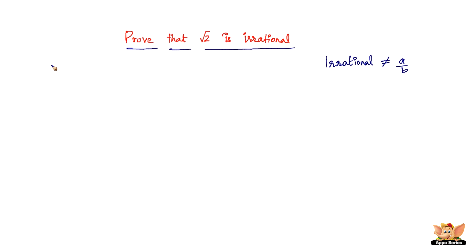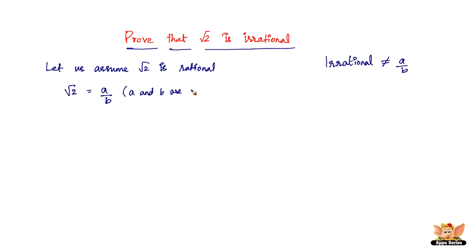So let us assume √2 is rational. If √2 is rational, we can write √2 = a/b. Now the most important thing to notice is that a and b are co-primes, that is their HCF is 1. In other words, a and b cannot be divided by any number other than 1 — they have no common factor. This fact is going to be crucial at the end of the problem to prove that √2 is irrational.